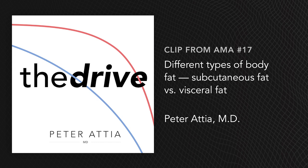That's the place where you don't want to see any fat. Where visceral fat typically shows up is around the liver, the kidneys, the spleen, and the gut. That fat is incredibly associated with metabolic disease.